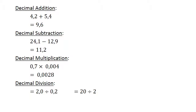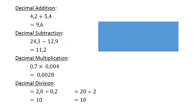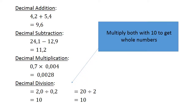Decimal division: 2.0 divide by 0.2. Multiply both by 10 to get whole numbers: 20 divided by 2 equals 10.